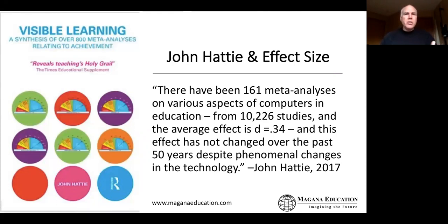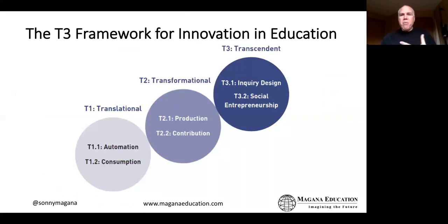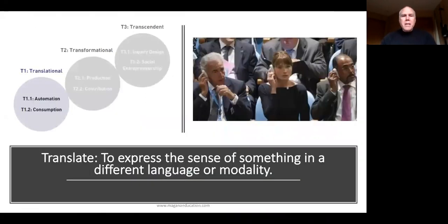Here's what's even more alarming: the impact of technology hasn't changed in 50 years. Despite phenomenal changes in technologies, the average impact is still 0.34 on student achievement—well below the zone of desired effects. That's a wicked problem. We need a framework that resolves the low impact use of technology by categorizing different uses in terms of low, medium, high, and very high.